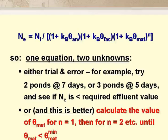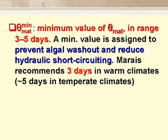So we have one equation with two unknowns. We can solve it either by trial and error, or — and this is better — by calculating the value of theta mat for N equals 1, then for N equals 2, and so on, until theta mat is less than theta mat min, the minimum value of theta mat. A minimum value of theta mat is used in order to minimise hydraulic short-circuiting and to allow sufficient time for the algae to multiply. Theta mat min has a value in the range 3 to 5 days — generally 3 days in hot climates and 5 days in temperate climates.